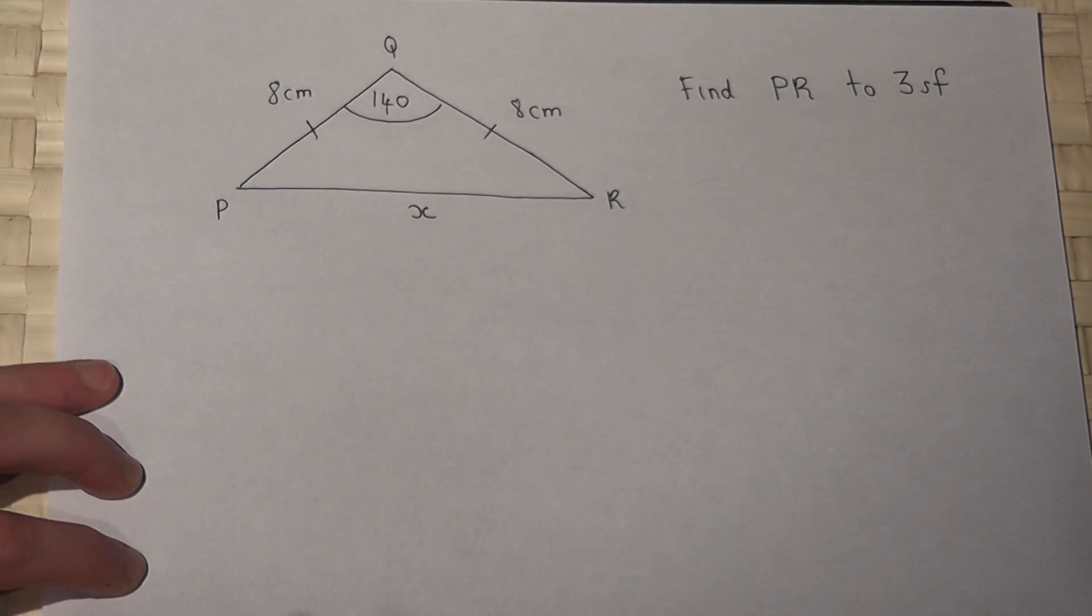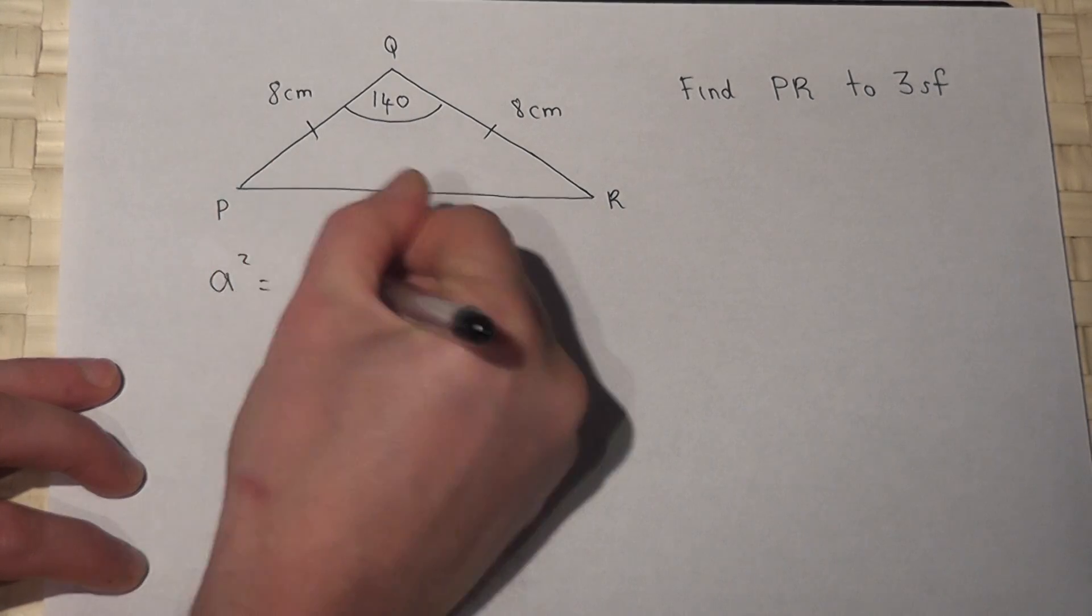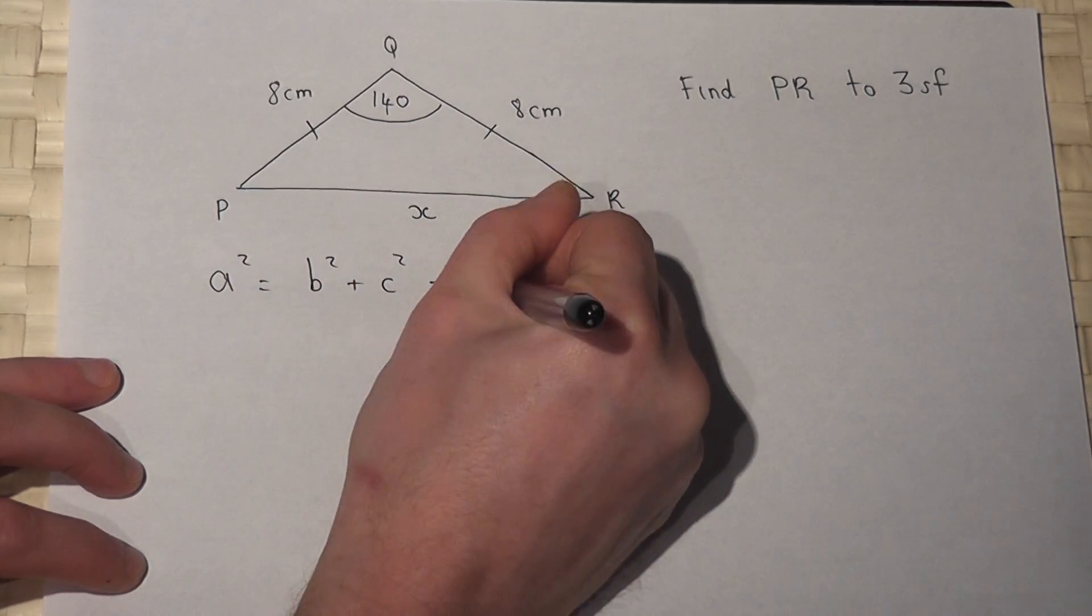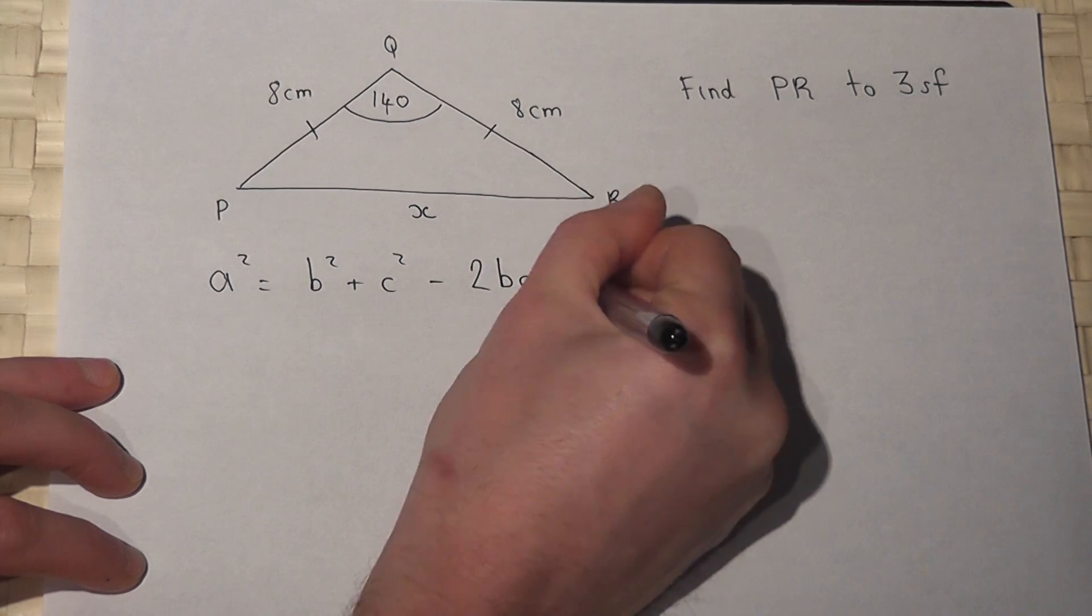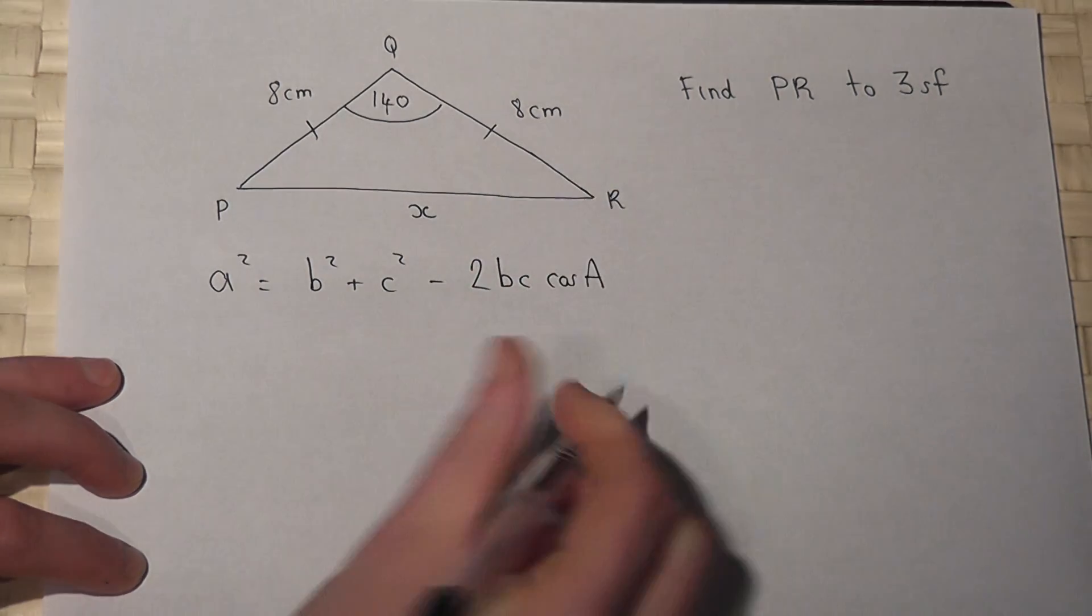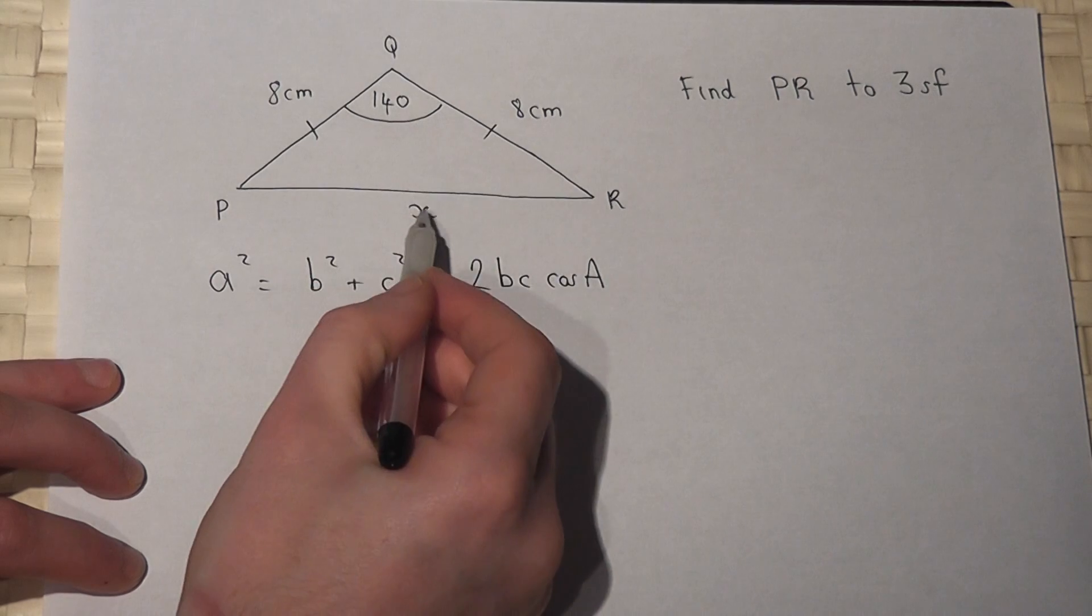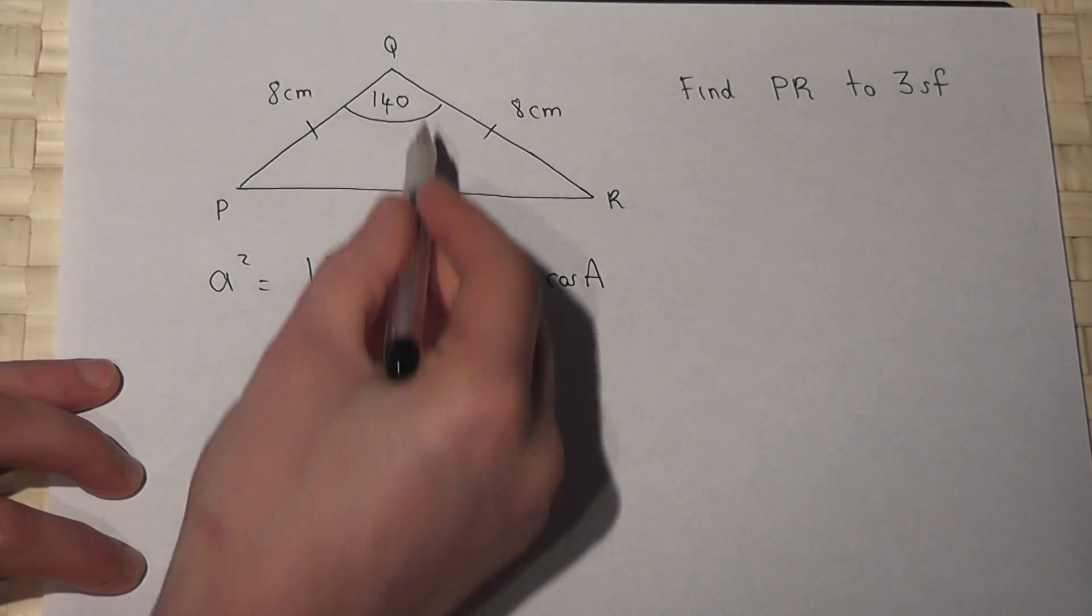Now the cosine rule tells us that a squared equals b squared plus c squared minus two b c cos of the angle. And this is used when you're asked to find a side opposite an angle.